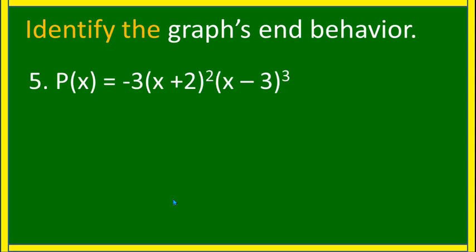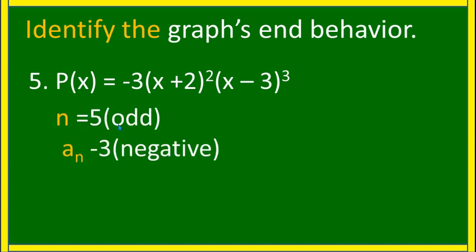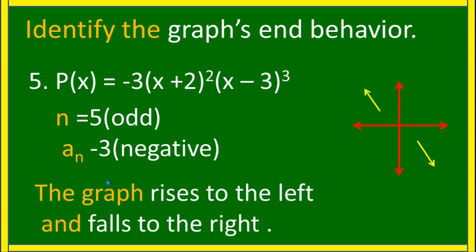Last example: p(x) = −3(x + 2)²(x − 3)³. What is n and what is the leading coefficient? The n is 5, which is odd, and the leading coefficient is negative 3, which is negative. Therefore, the graph rises to the left and falls to the right.